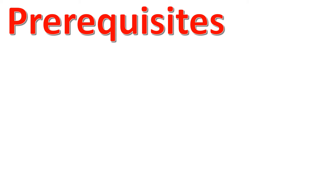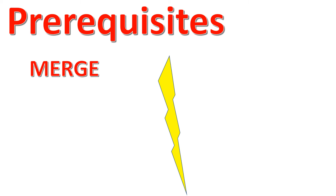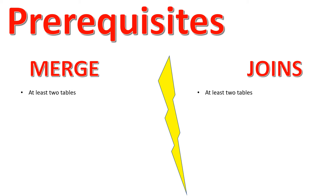Let's begin. The first thing we need to note is what are the prerequisites when we are going to use a merge statement or a join statement. The first prerequisite is there must be at least two tables when you are going to try merge. The same goes with joins — you should have at least two tables when you are going to try joins.